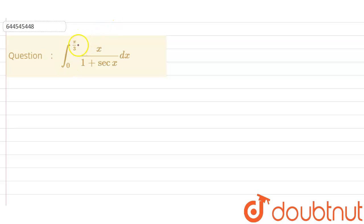Okay guys, let's start solving this question. We have given that integral from 0 to π/3 of x divided by (1 + sec x) dx. So this is our I.